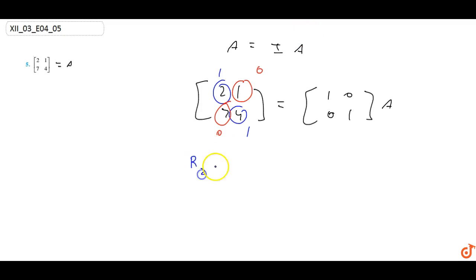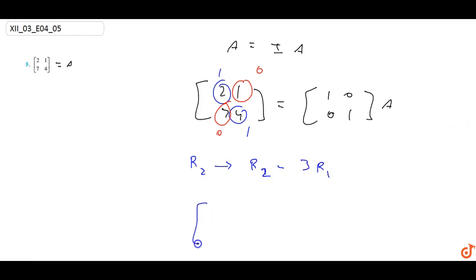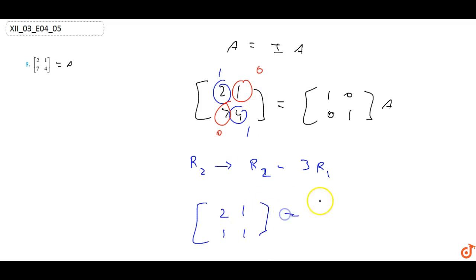After applying row operations, the matrix becomes: six seven minus six, one four minus three, one one zero — minus three one — into A.